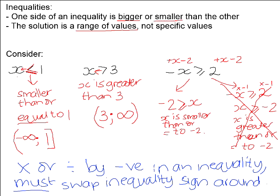If we had negative x is greater than or equal to 2 and chose to multiply both sides by negative 1, that would be fine — provided we switched the inequality sign around to keep the answer correct. My suggestion: don't try to remember to do this. Rather, just move the x to where it's going to be positive in the inequality and you can never go wrong with the inequality sign.